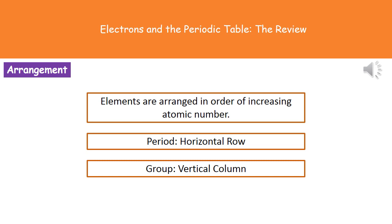And that is in order of increasing atomic number. And remember there are these two key features on our periodic table: the horizontal rows known as the periods, and the vertical columns are known as the groups.